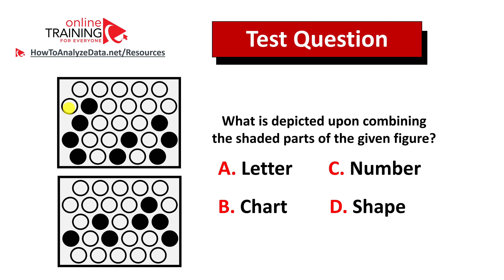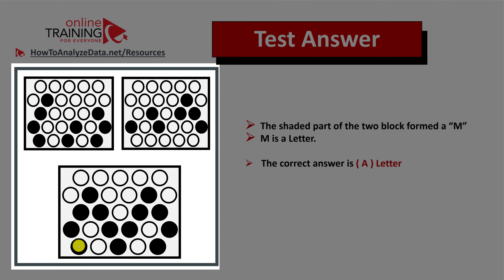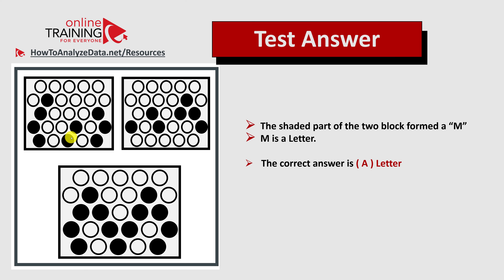Upon combining the two rectangles, the letter M can be formed, so the correct answer is choice A, letter. The trick is that during the test you typically don't have access to paper, so you have to visualize this in your memory. What I did was use the left rectangle as a base and then mentally move the black dots from the right rectangle into the left to see which shape could be formed — and that's how I came up with M.